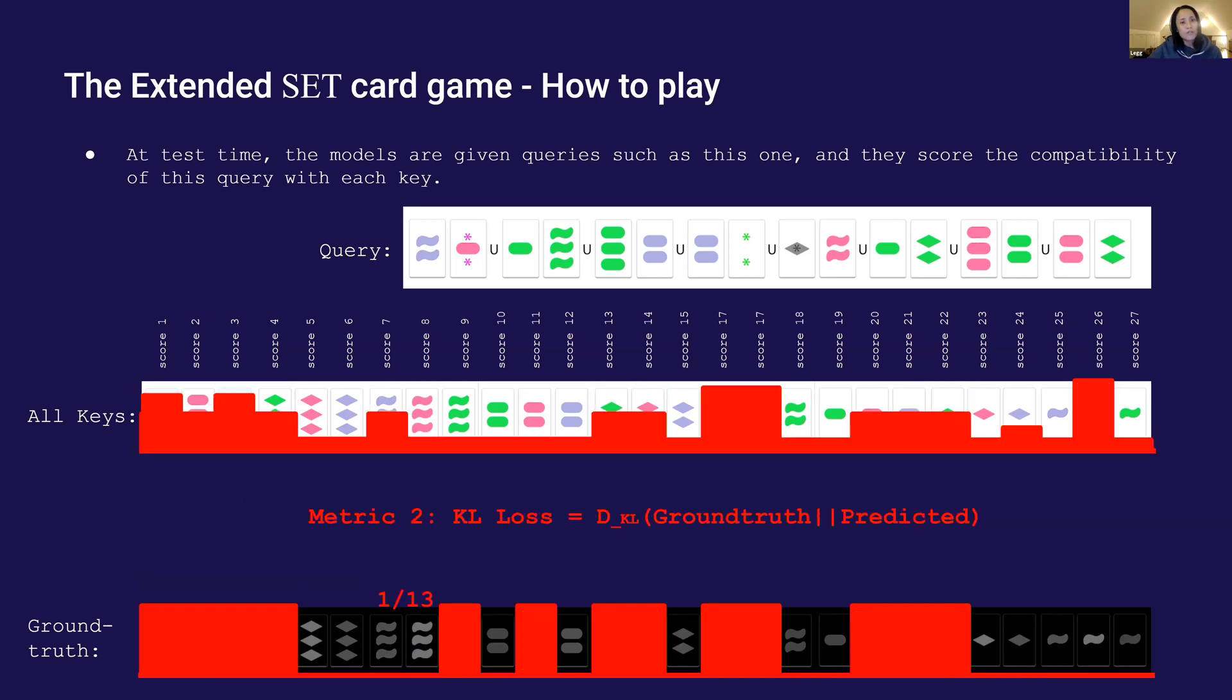I call this metric the top K prediction ground truth overlap for now. A more sensitive metric is to compare the KL divergences between the normalized predicted scores and a ground truth distribution constructed from dividing one among all the ground truth keys evenly.